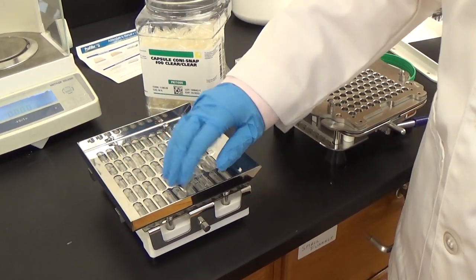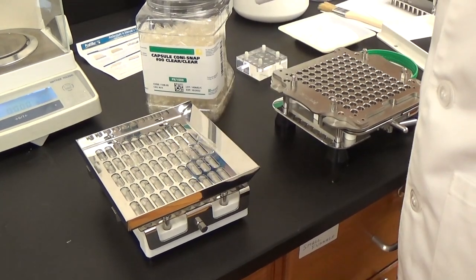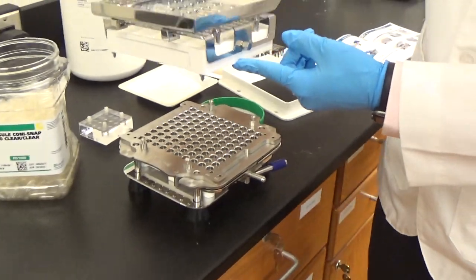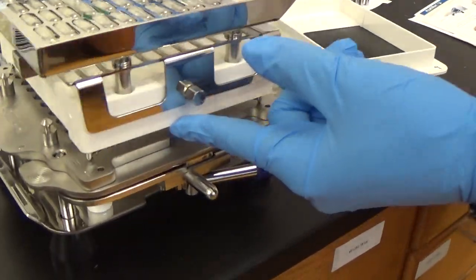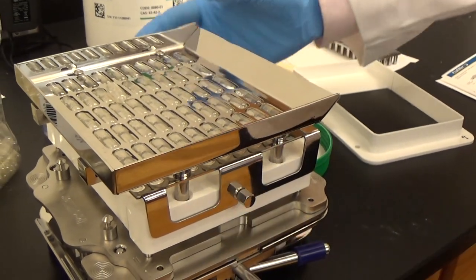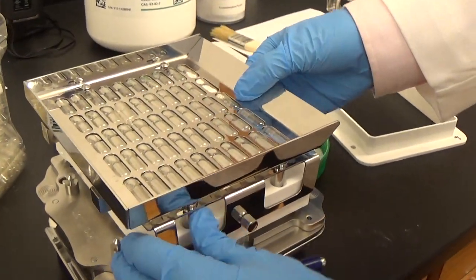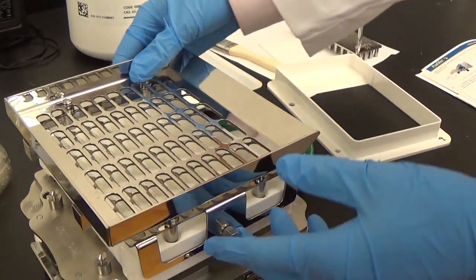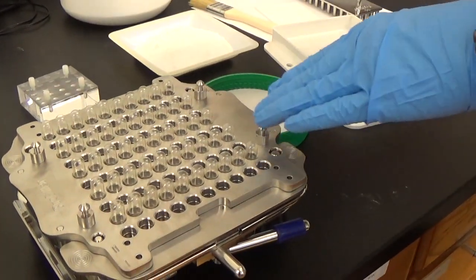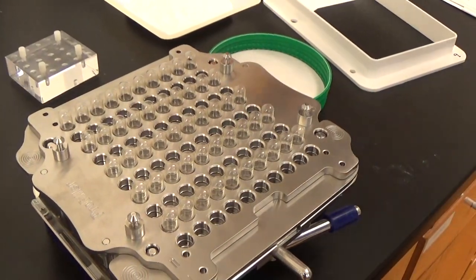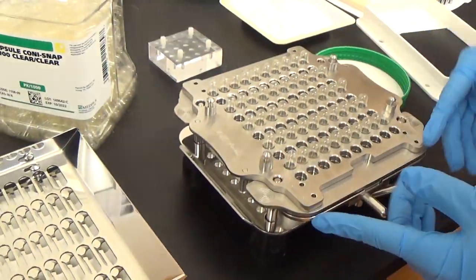The next thing is to remove the ones that are remaining and then place this machine on top of the capsule filling device. This will allow you to fill 50 capsules at once. The next thing we have to do is, because this only fills 50, we have to fill this once more again at the second position.